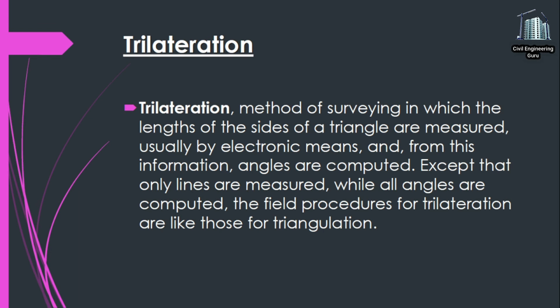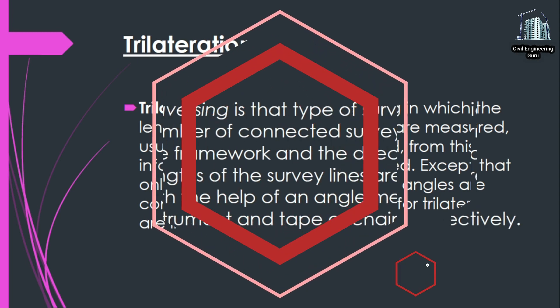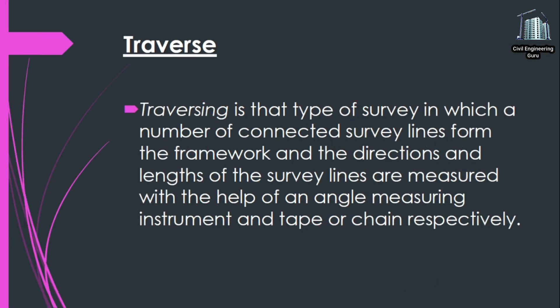Trilateration is a method of surveying in which the lengths of the sides of a triangle are measured, usually by electronic means, and from this information angles are computed. Except that only lines are measured while all angles are computed, the field procedures for trilateration are like those for triangulation.